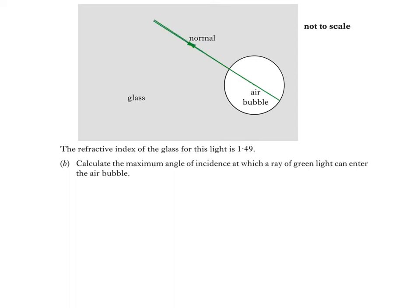As the angle in glass increases, you can see that the green light is partially reflected and partially refracted into the air bubble. This continues until the refracted ray is 90 degrees to the normal. The angle of incidence at this point is known as the critical angle, theta c.